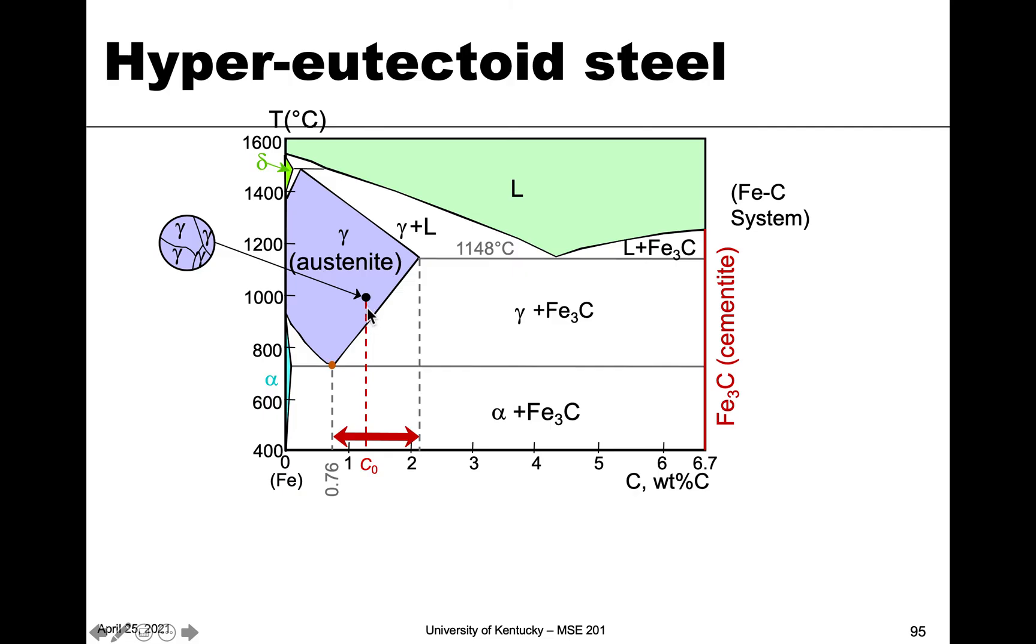And so when we cool, we're going to see that we form at this temperature, now because of the higher amount of carbon, we actually start to form the other phase, which is over here, which is Fe3C. And so you can see it's listed here in red. So you can kind of tell the difference.